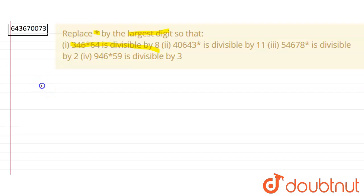Let's start. The number given to us is 346*64. For the criteria of a number to be divisible by 8, its last three digits should be divisible by 8.